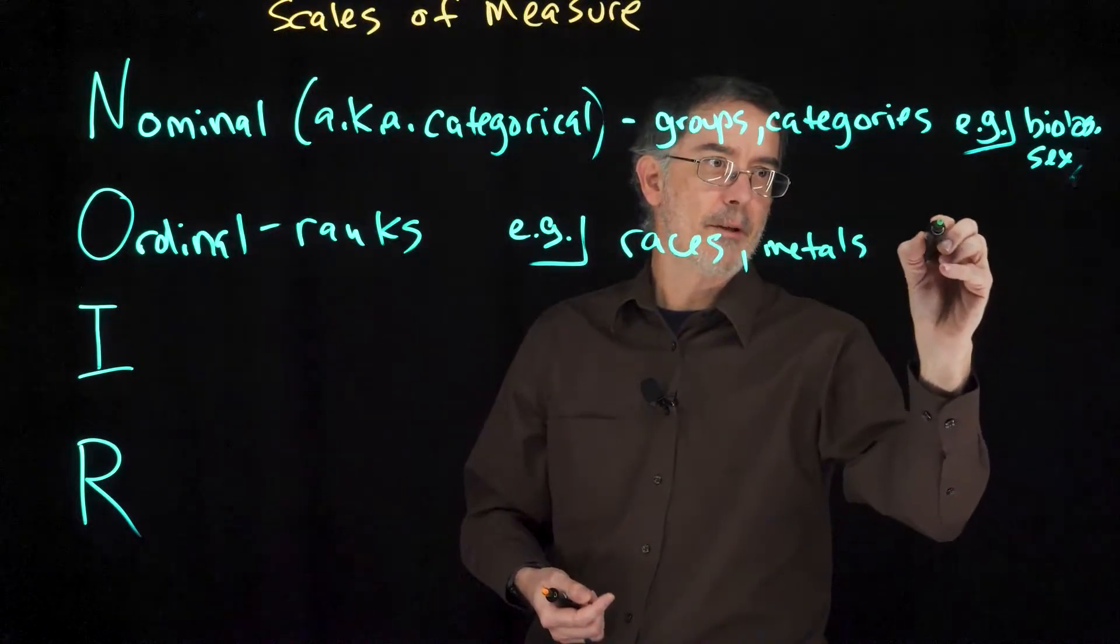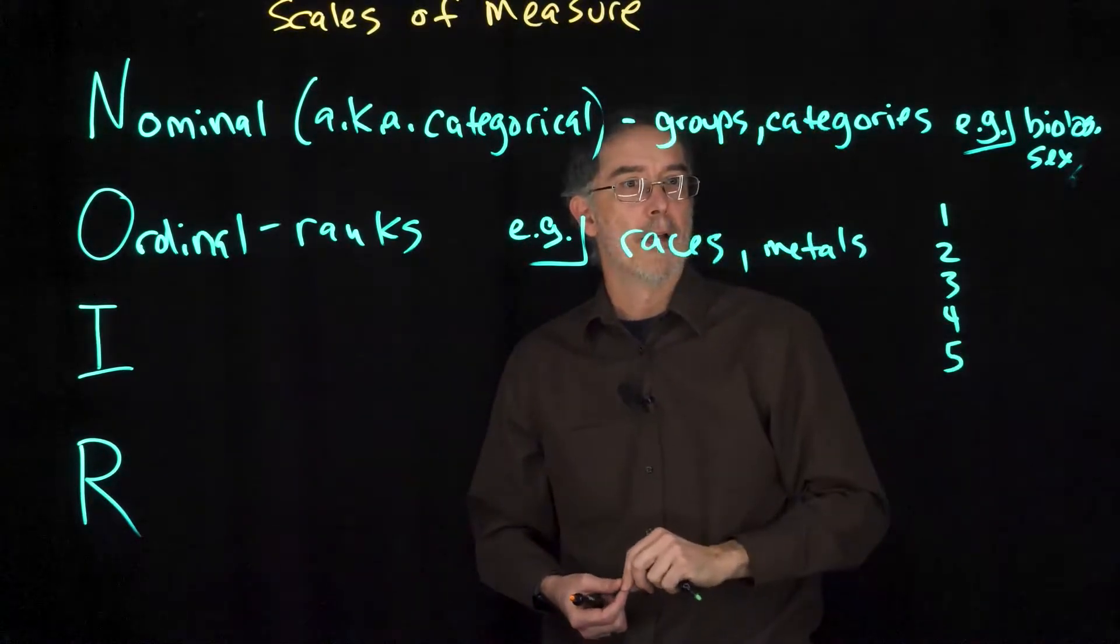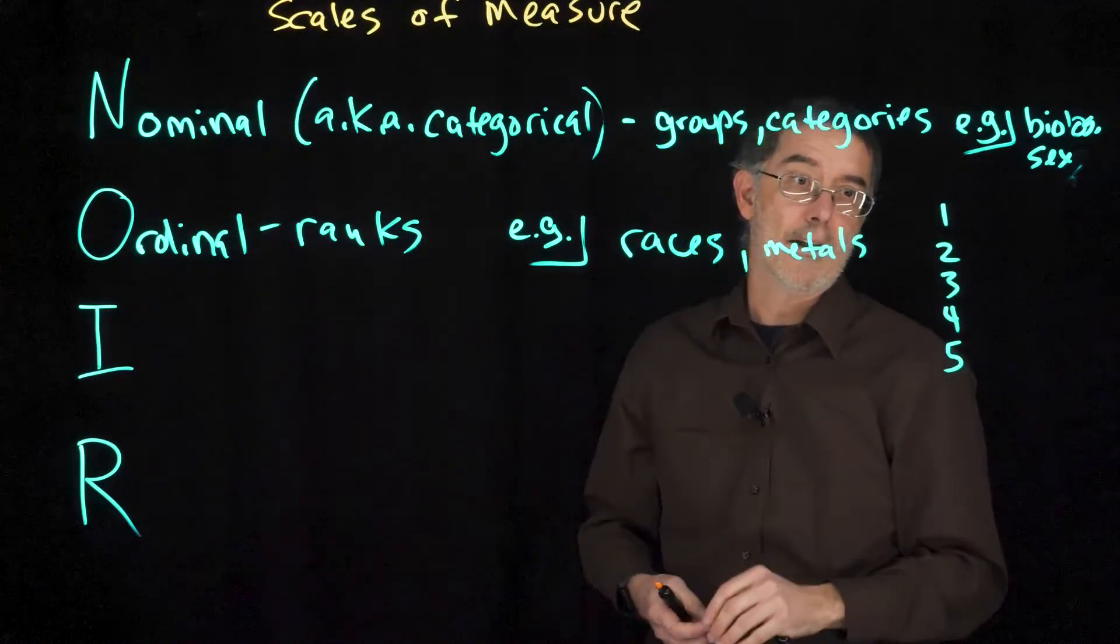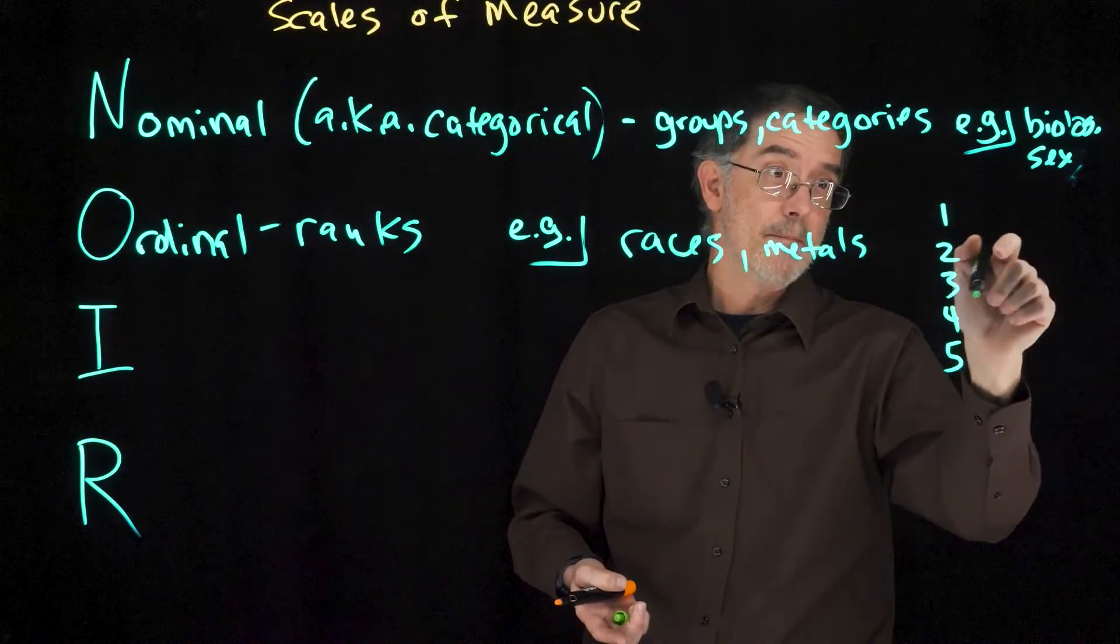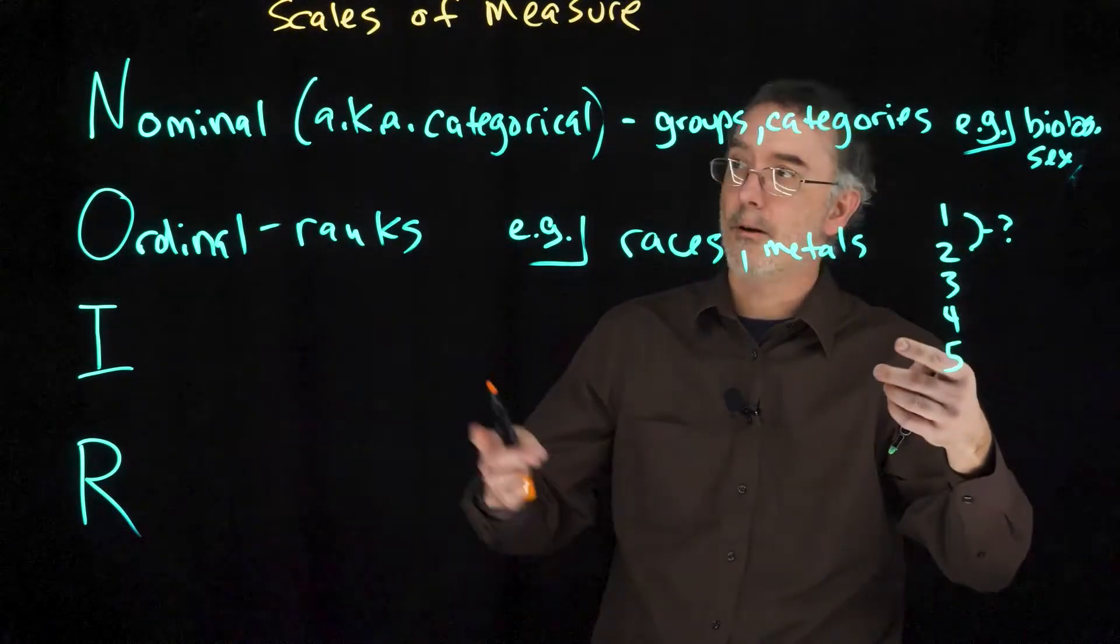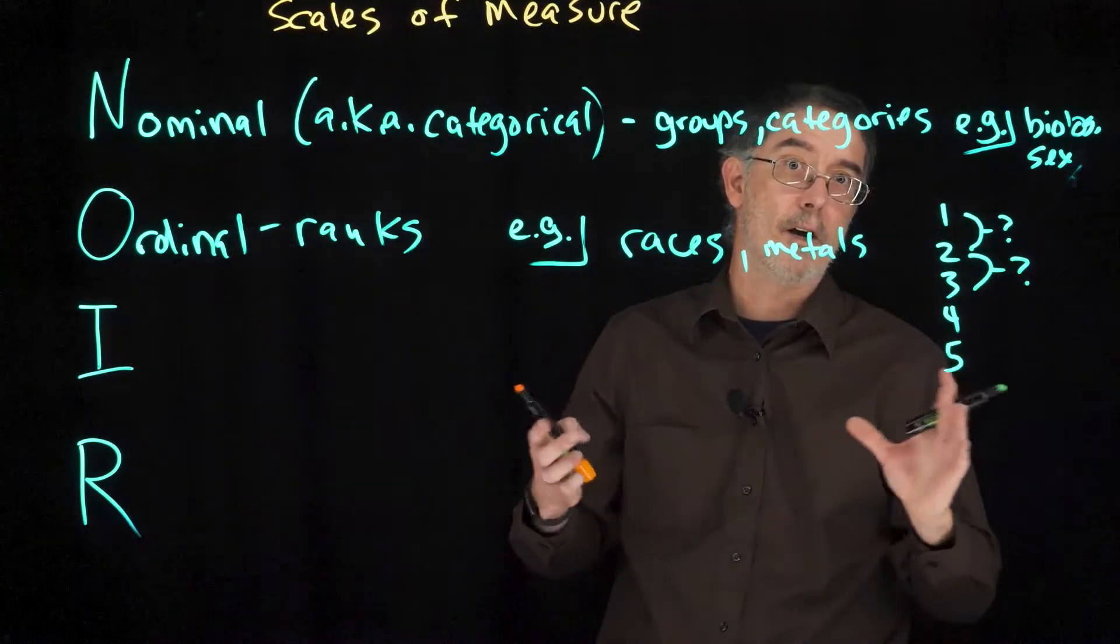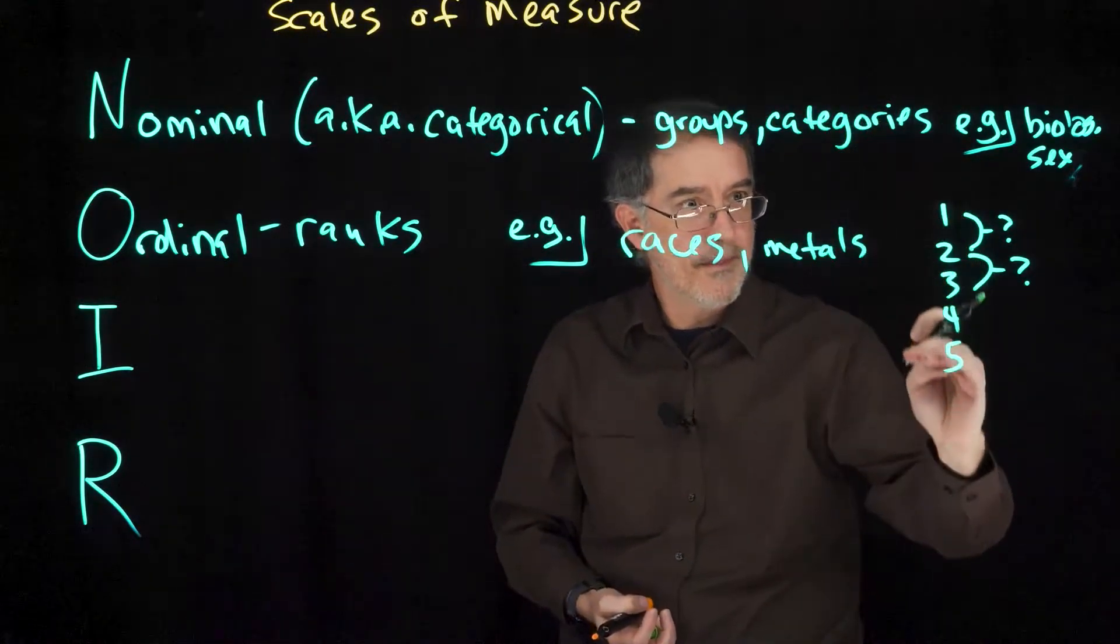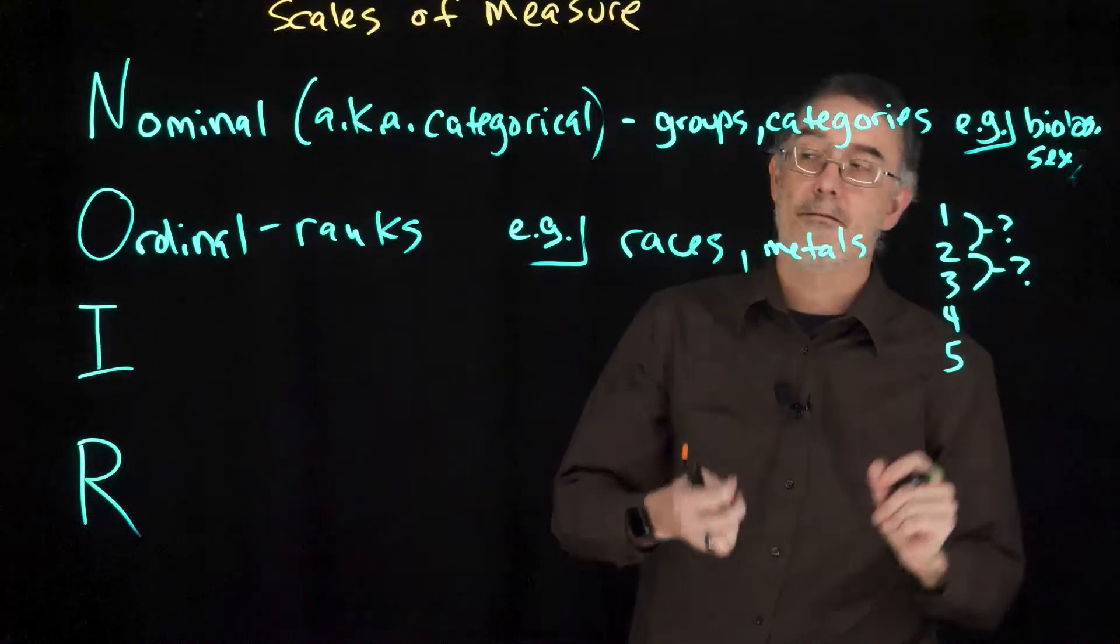Notice here, somebody might have first place, somebody else might have second place, somebody else might have third, and fourth, and fifth, and so on. For ordinal, each person should have a unique rank, ideally. But notice that the first person, you know they did better than the second person, but you do not know by how much. It could have been 10 seconds, it could have been 10 minutes. You cannot tell from an ordinal measure. Ordinal variables, they tell you how to sort the observations from low to high, but they do not tell you how much the different measures are apart from each other.